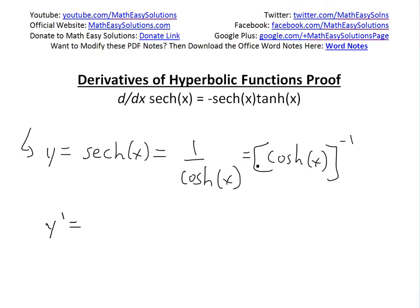y prime equals, using the power rule just like my earlier proof video on hyperbolic sine of x—I mean cosine of x—we take the derivative of this. It's going to be negative 1 using the power rule, and then cosh of x to the power of negative 2.